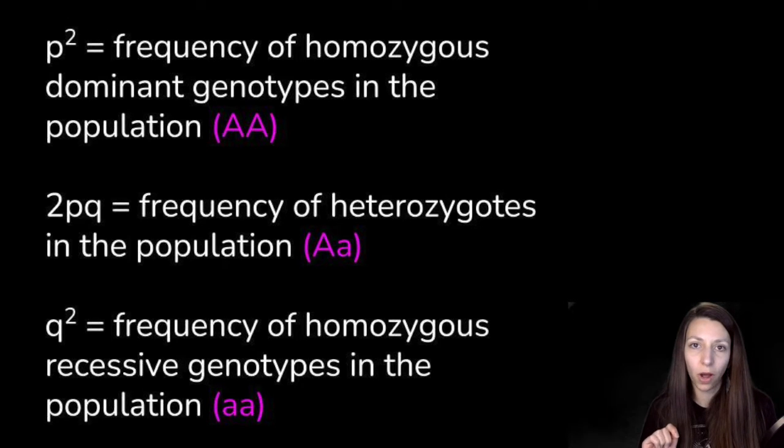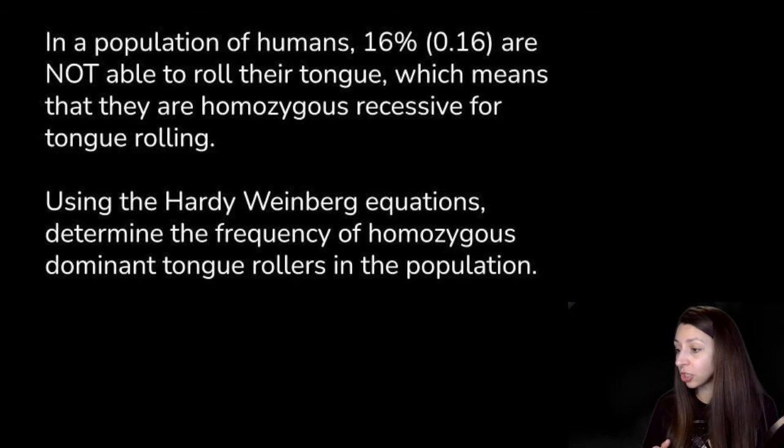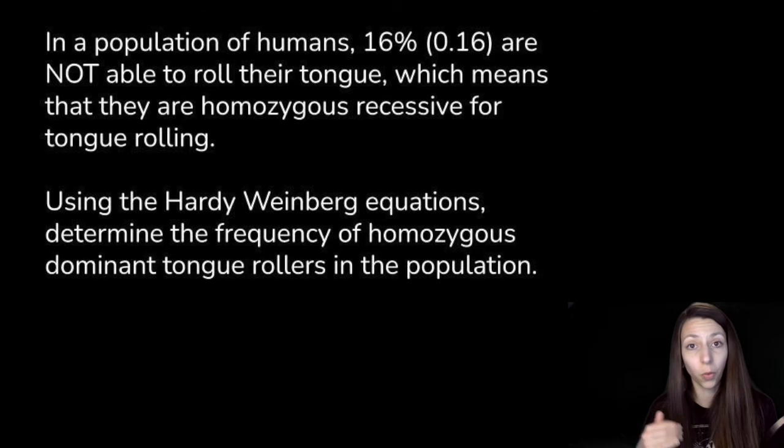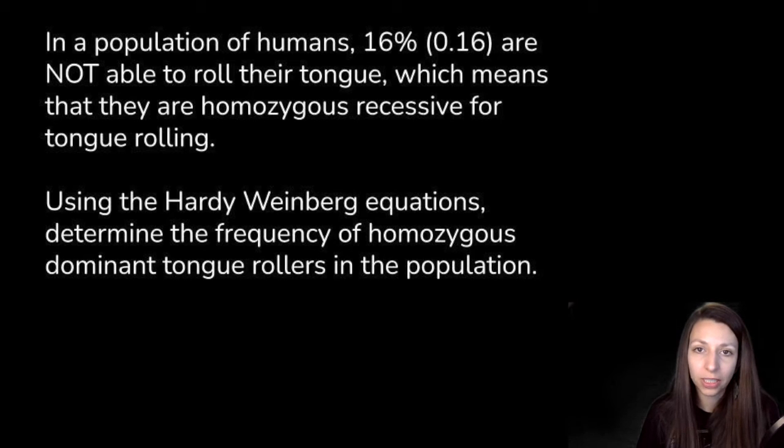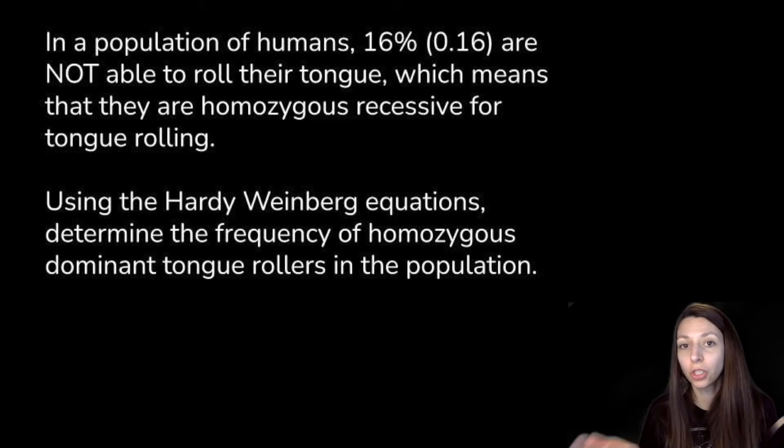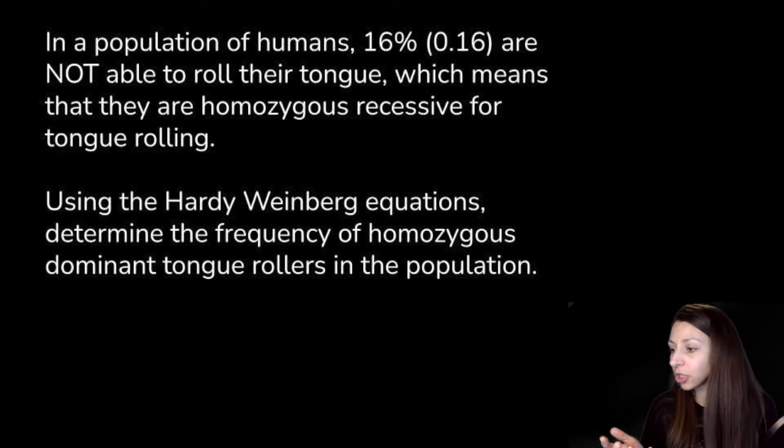The best way to do Hardy-Weinberg is to practice it. In a population of humans, 16% (or 0.16) are not able to roll their tongue. We're going to deal with frequencies, so convert percentages to frequencies. Being unable to roll their tongue means they are homozygous recessive for tongue rolling. Using the Hardy-Weinberg equations, determine the frequency of homozygous dominant tongue rollers in the population.